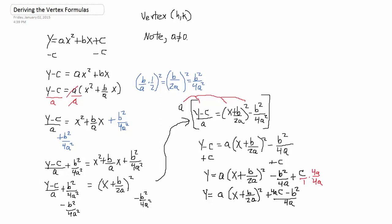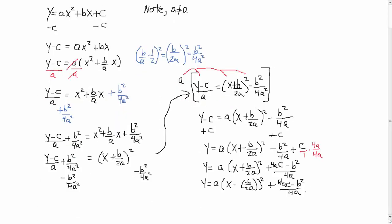So, if you combine the like terms over here, all of the constants, you'll get this expression. Now, this I can also write as A, parentheses, X minus, minus B over 2A. All of that squared. Plus 4AC minus B squared all over 4A. And this is quite similar to regular vertex form.